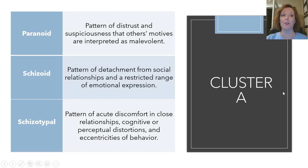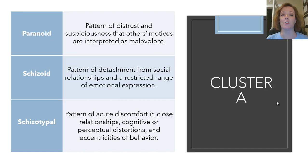Cluster A includes paranoid personality disorder, schizoid personality disorder, and schizotypal personality disorder. You can look at the descriptions in the chart to answer questions in your guided notes. Paranoid personality disorder exhibits a pattern of distrust and suspicion where others' motives are interpreted as malevolent. Schizoid personality disorder involves a pattern of detachment from social relationships and a restricted range of emotional expression. Schizotypal personality disorder involves a pattern of acute discomfort in close relationships, cognitive or perceptual distortions, and eccentricities of behavior.